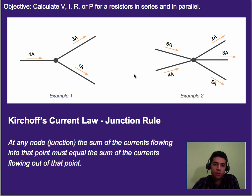So that's Kirchhoff's current law or also known as the junction rule. Basically it says at any node, this is a node right here or junction, the sum of the currents flowing in, in this case 4 amps, has to equal the sum of the currents going out, in this case 4 amps.